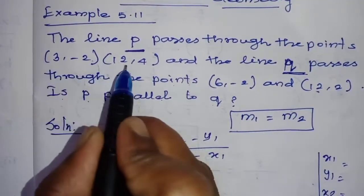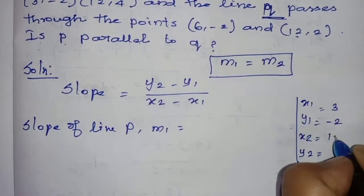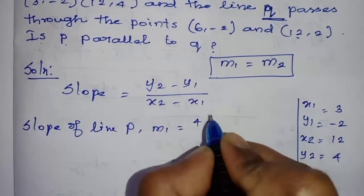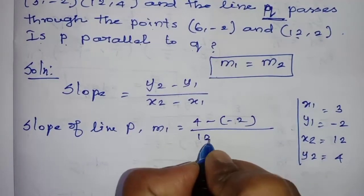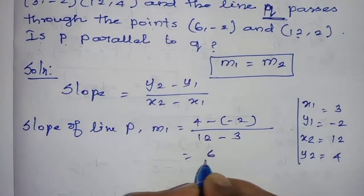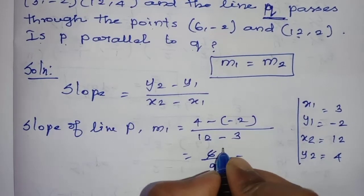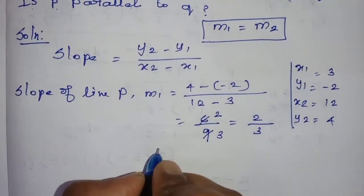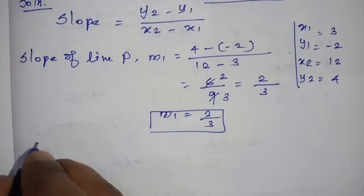So x1 is 3, y1 is -2, x2 is 12, y2 is 4. So minus into minus plus, 4 plus 2 is 6, 12 minus 3 is 9. If we cancel, slope M1 equals 2 by 3. So slope M1 equals 2 by 3.